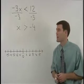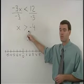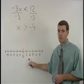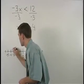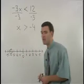Our next task is to graph x is greater than negative 4 on a number line. And to do that, we start with an open dot at negative 4.